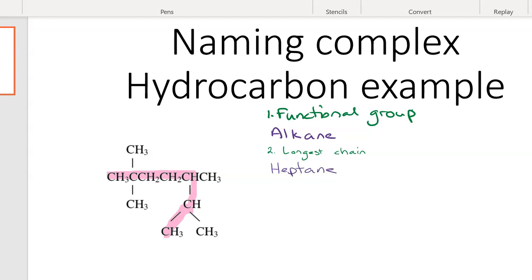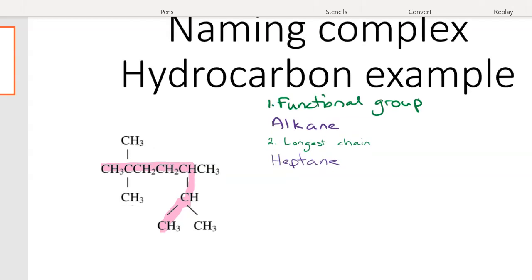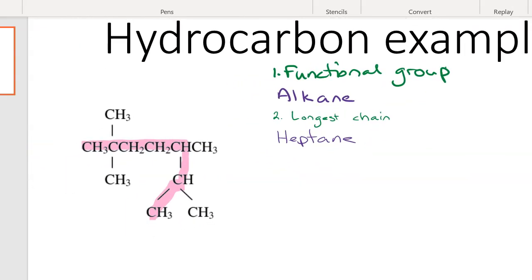But there's more going on than just straight heptane. Now we want to identify the side chains. We've got one there that's a methyl because it's just one carbon. That's another methyl, there's another methyl, and there's another methyl. That's four methyl groups.